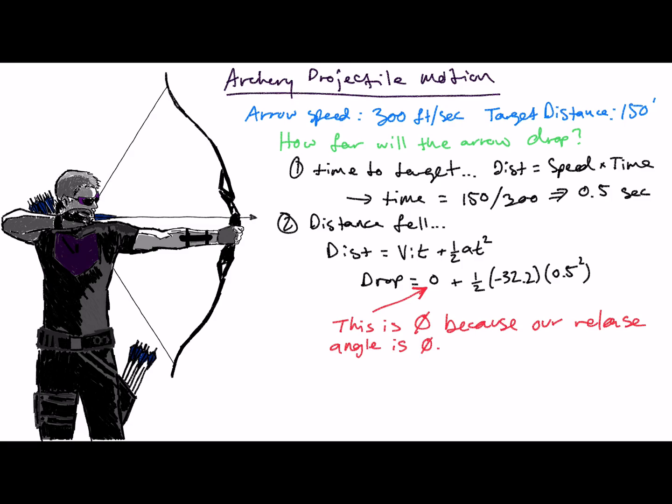We have no vertical velocity when the arrow is released. An upward release angle would lead to a positive initial vertical velocity, while a downward release angle would lead to a negative initial vertical velocity.